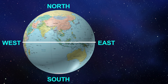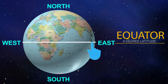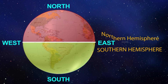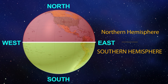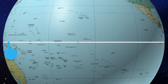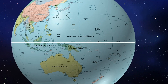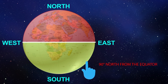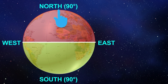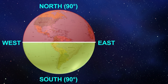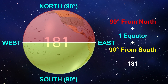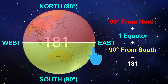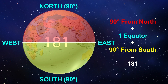The equator is an imaginary line around the middle of the earth and is a zero-degree latitude. It divides the earth into a northern hemisphere and a southern hemisphere. The earth is widest at its equator. Latitudes range from 90 degrees north to 90 degrees south, giving 181 latitudes total: 90 from north, 90 from south, and one equator.